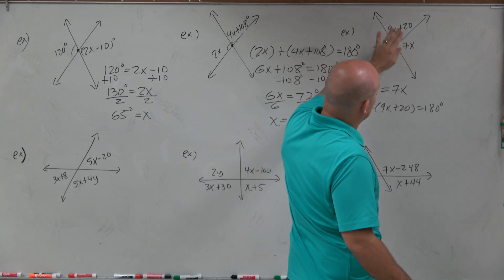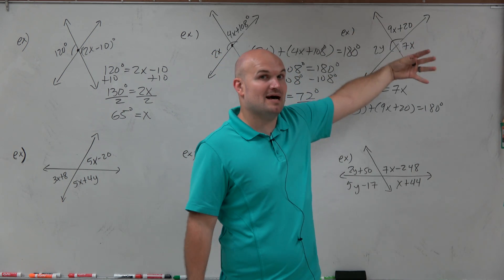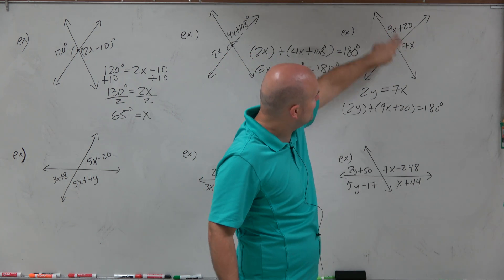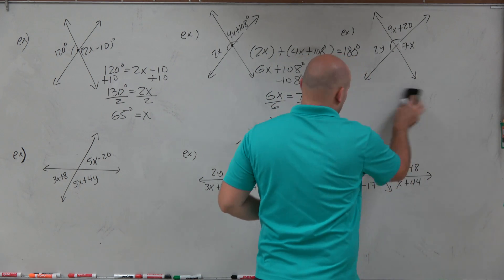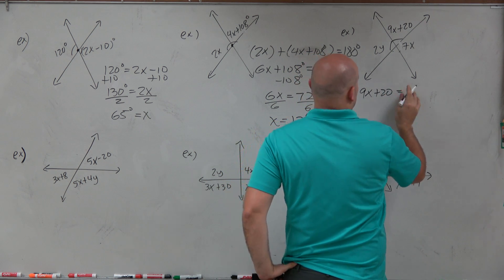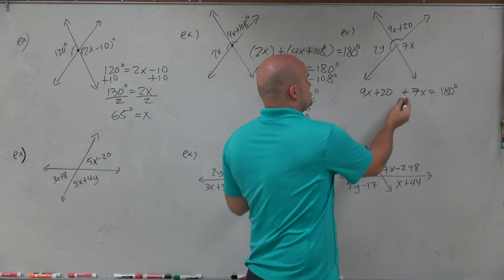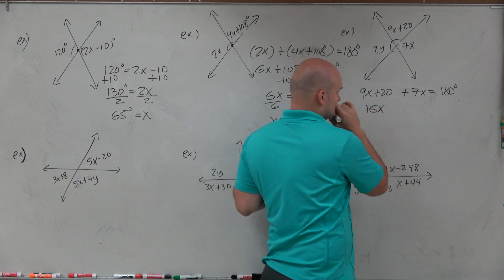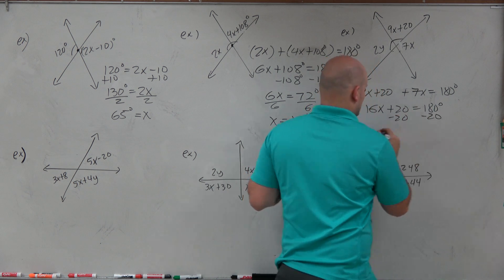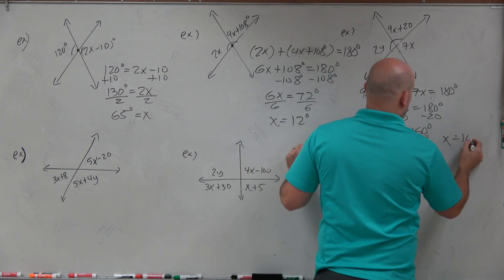You can see they're on the same side of a line, so they are supplementary. Instead of setting them equal, I say 9x plus 20 plus 7x equals 180 degrees. Combining: 16x plus 20 equals 180. Subtract 20 from both sides: 16x equals 160. Divide by 16: x equals 10 degrees.